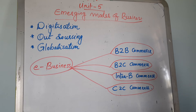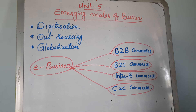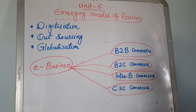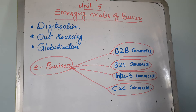We will discuss about e-business and what are the different types of e-business. First, we will see what is the meaning of emerging modes — that means new trends in business. The new trends in business are digitalization, digitization, outsourcing, and globalization.